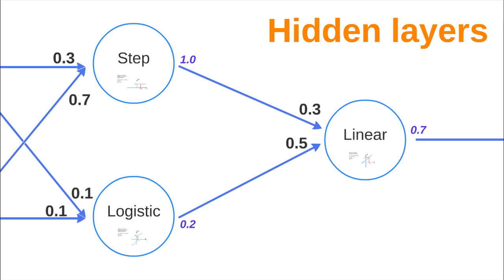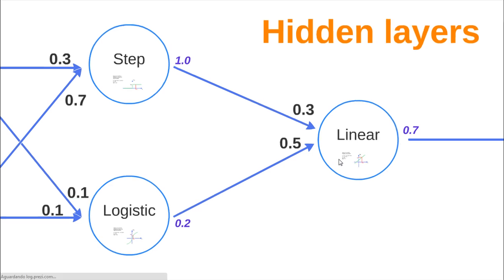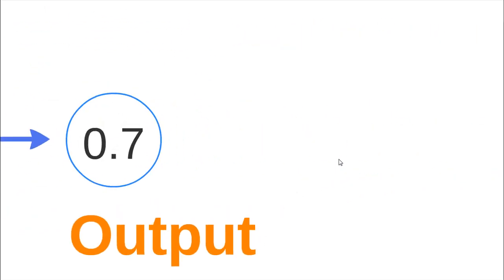In the middle, as I explained, we have the hidden layers. A set of two neurons compose the first hidden layer, and this neuron composes the second hidden layer. And here we have the output of our neural network.